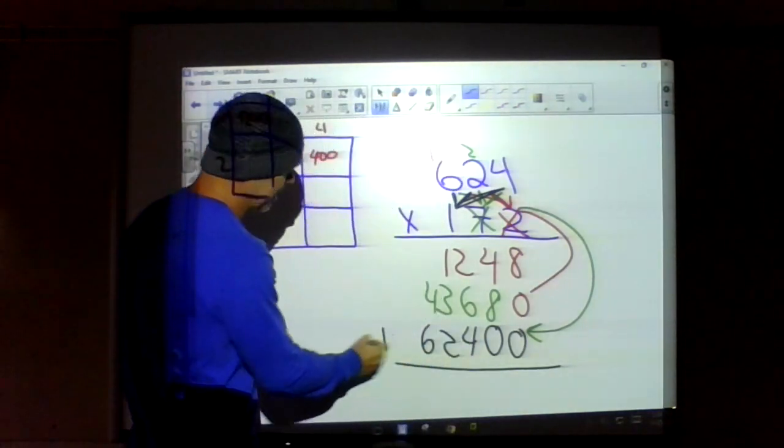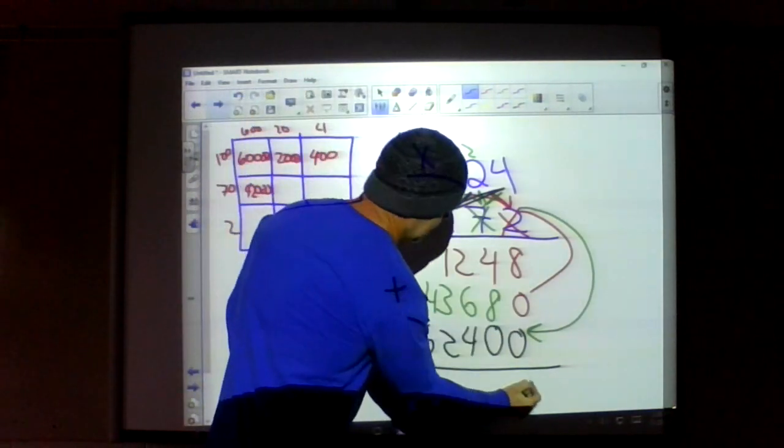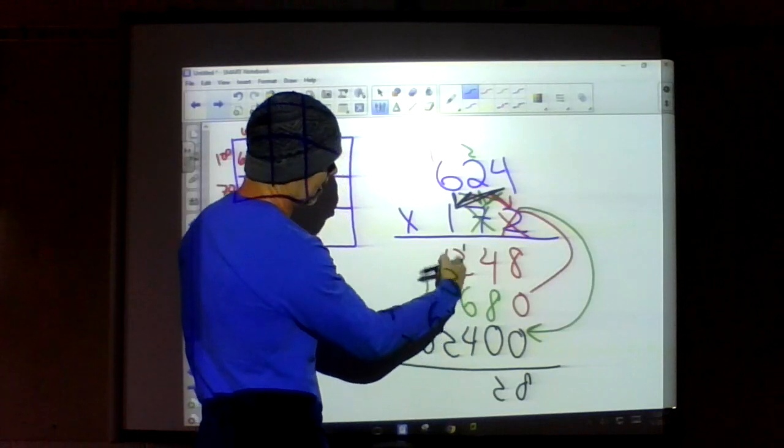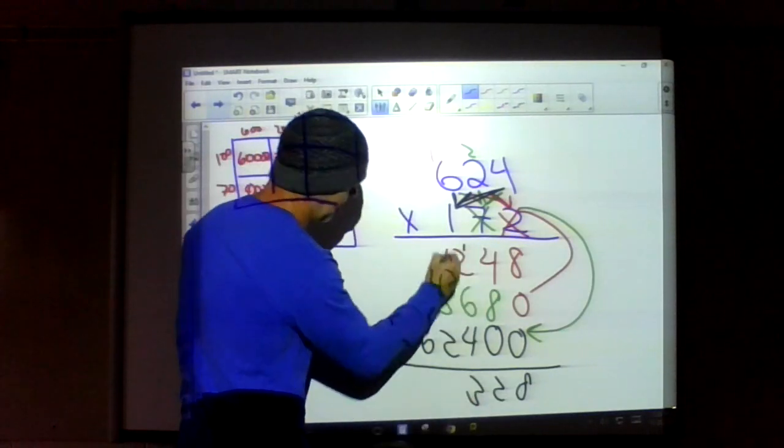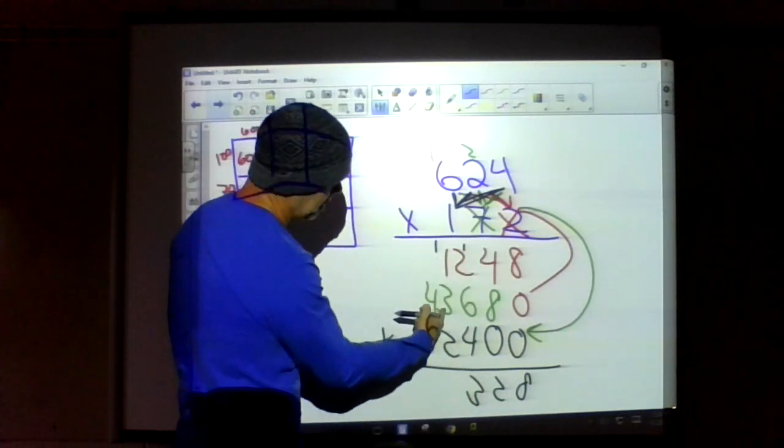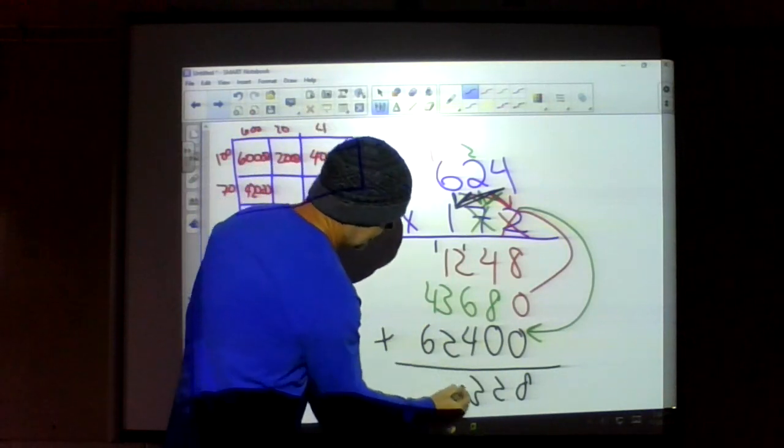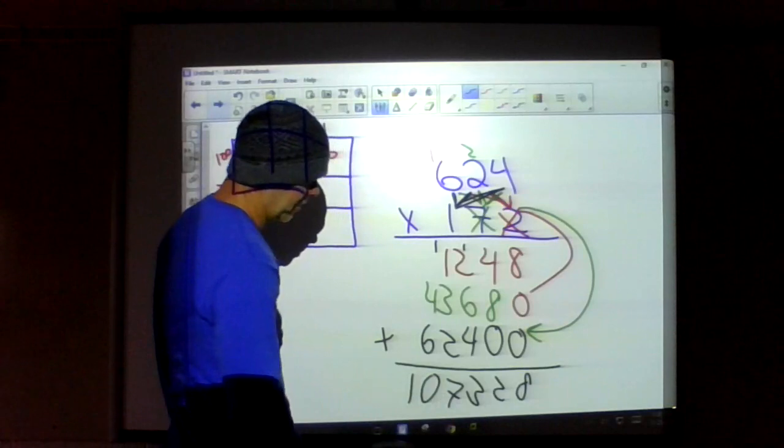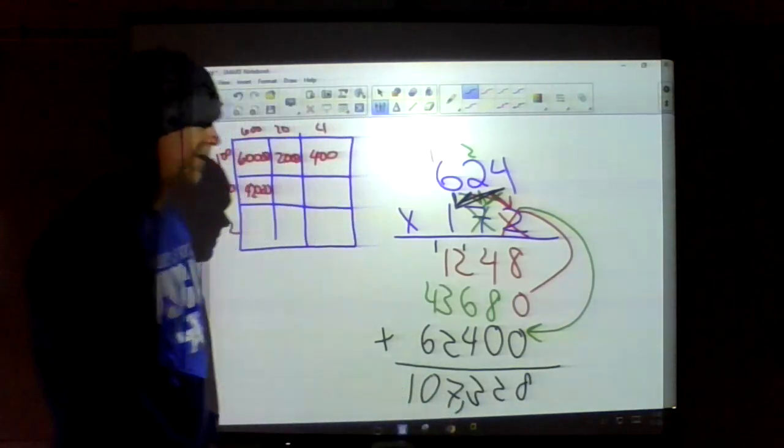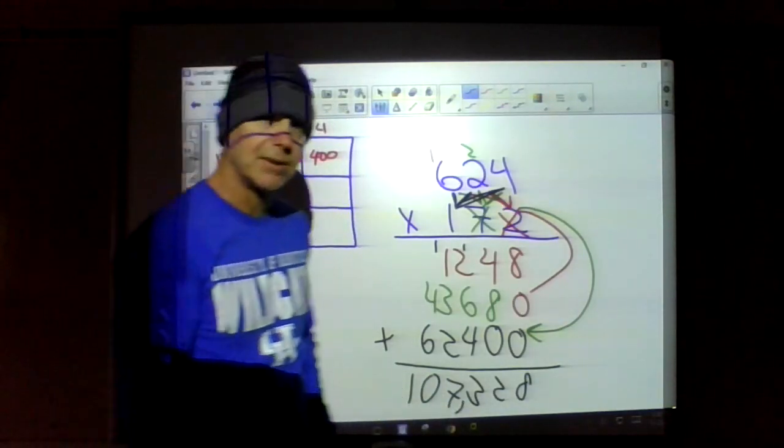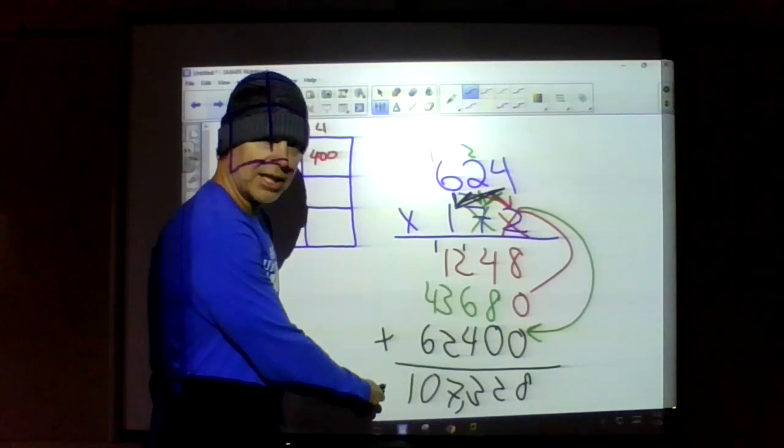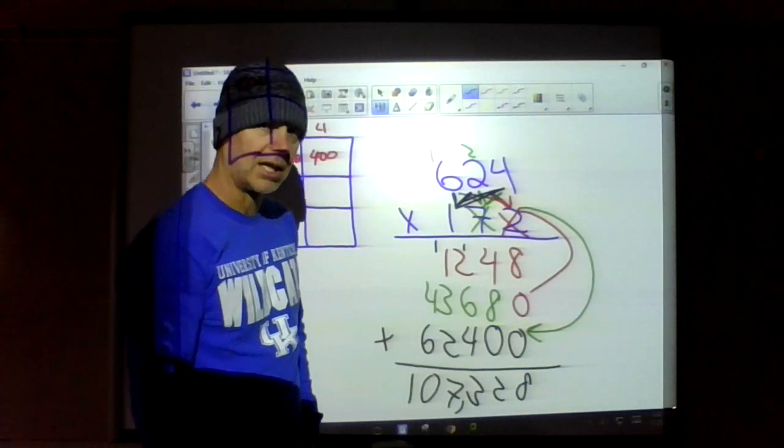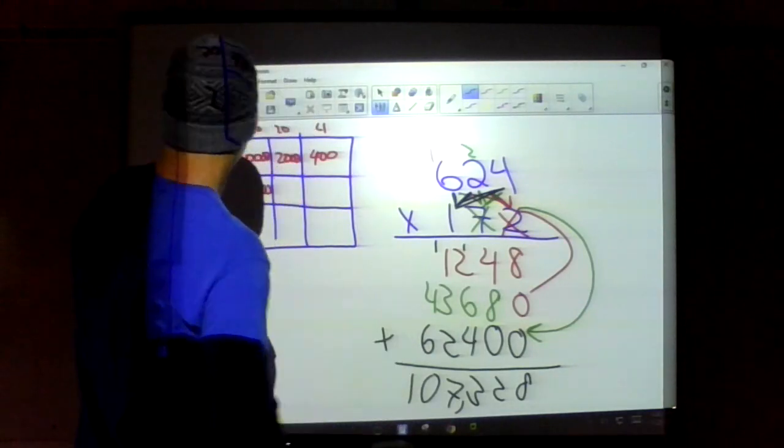One hundred times anything is going to end with two zeros. So let's just put them in there and make life easy. One times four is four, one times two is two, and six times one is six. Add all these up, these are all my partial products. Eight, twelve, carry my one. Ten, eleven, twelve, thirteen, carry another one. Two, five, seven, no need to carry. Six and four. One hundred and seven thousand three hundred twenty-eight.